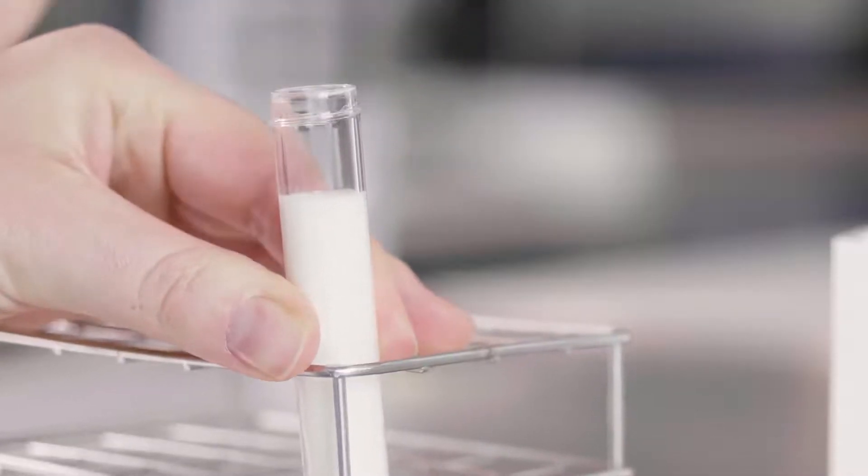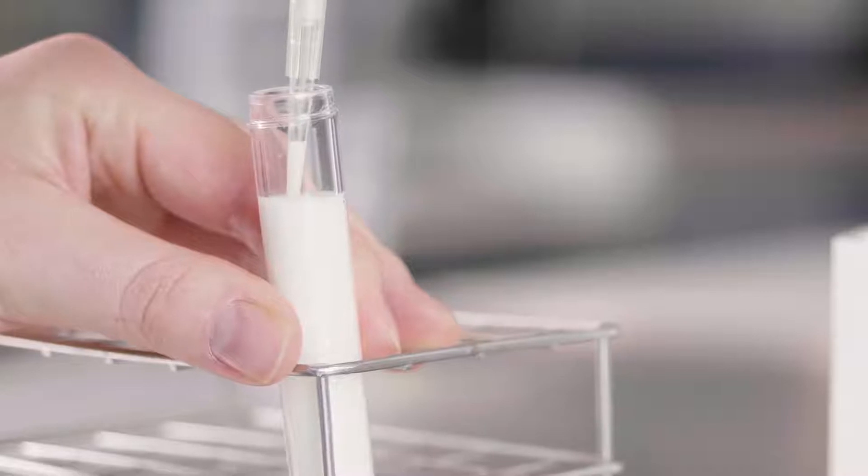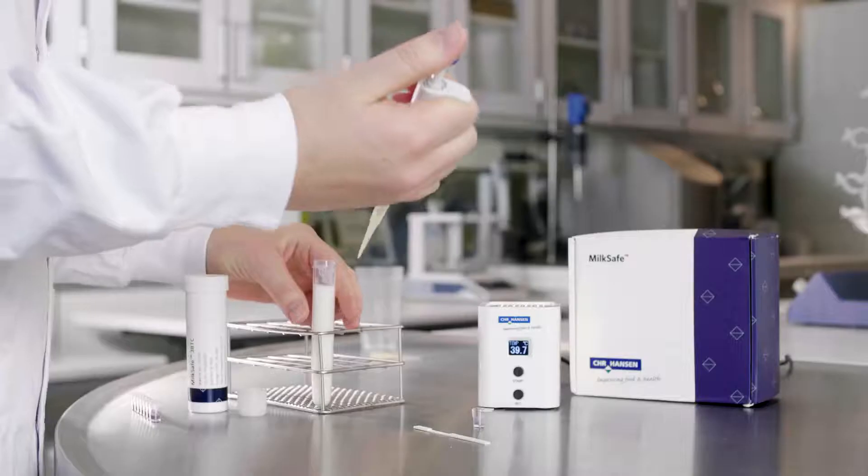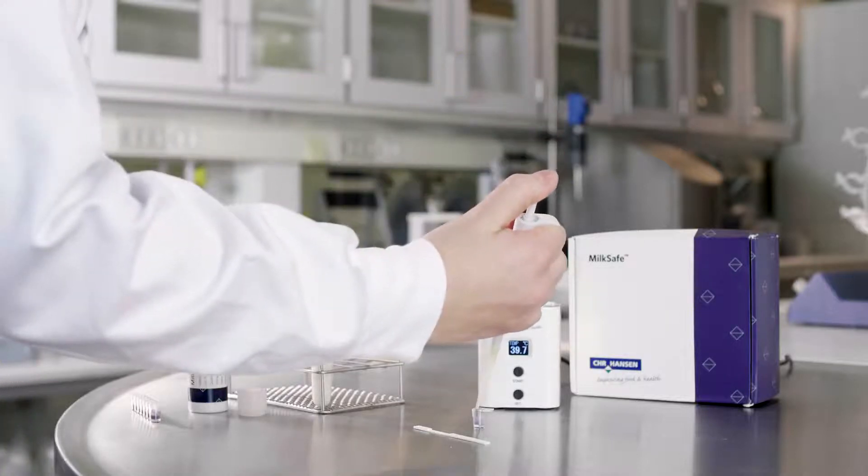Add 200 microliters of milk to the reagent microwell and mix by pipetting up and down until the color is uniform, approximately 5 to 10 times.